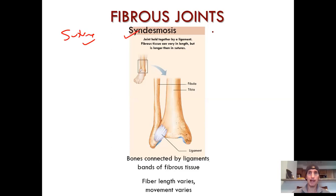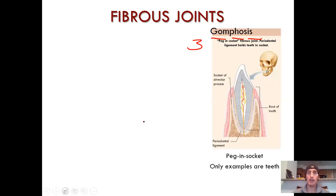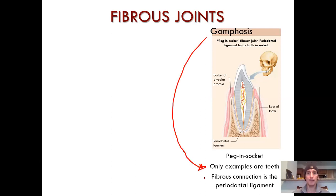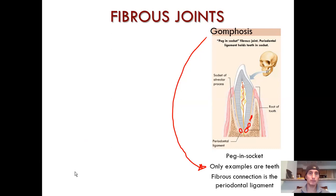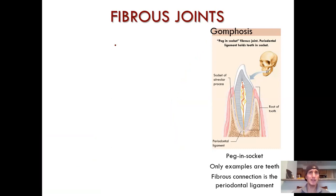Last one: gomphosis — a three-syllable word. Peg in socket is what that means. The periodontal ligament holds the tooth in the socket. This is the only example — it's in your teeth. Peg in socket, gomphosis, and the fibrous connection is the periodontal ligament. Very small, very short in length. Fibrous joints are meant more for stability and really holding things together.